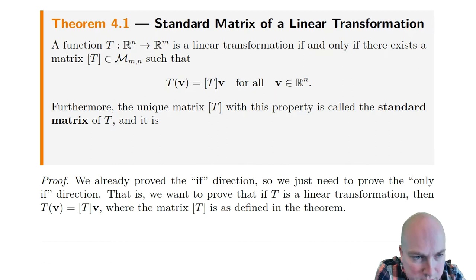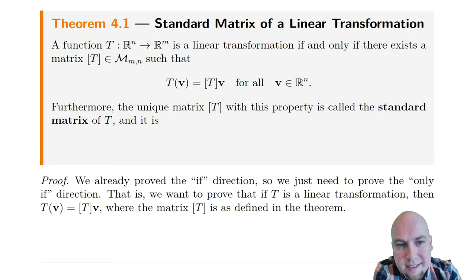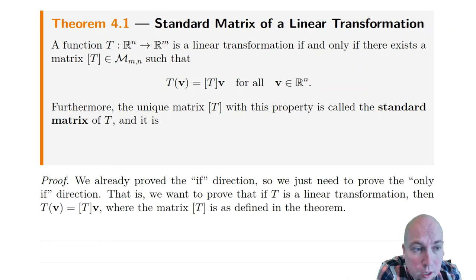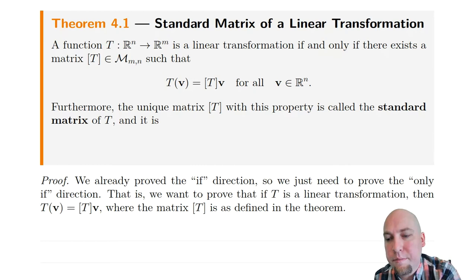To dwell a little more on this equation: linear transformation applied to V equals matrix times V, and the square brackets around T is just new notation for whatever matrix actually fits in this spot — whatever matrix does the same thing as T itself. A couple more remarkable things buried in this theorem: the standard matrix of T is unique. There's exactly one matrix that does the job. Furthermore, we have an explicit formula for this matrix. If I give you some linear transformation T and say find me the standard matrix, we have a formula for it.